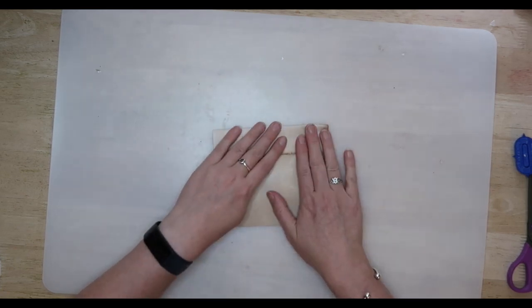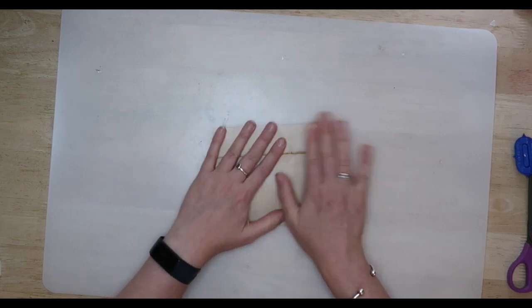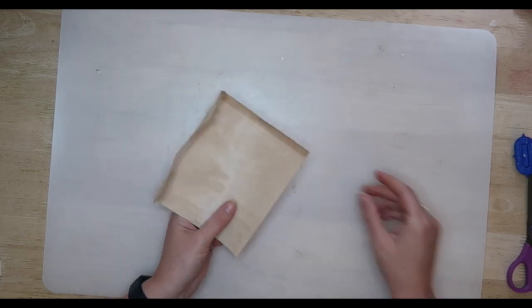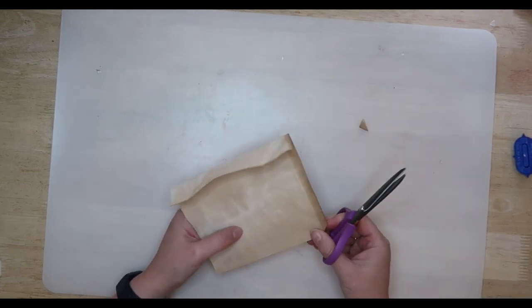It will be best to fold the horizontal score lines first. The first one is going to mark the bottom of the envelope and the second is going to make the envelope flap.